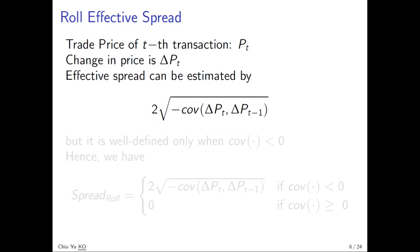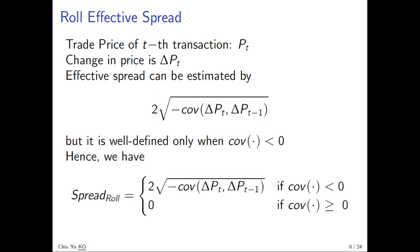The effective spread can be measured by - later you will see the reason why - two times the square root of negative covariance of the change in price and its own lag. The square root can only take positive values, so this is only well-defined when the covariance is negative. That is why when we say the Roll spread is well-defined, it equals the formula. When it is not well-defined, it is zero.